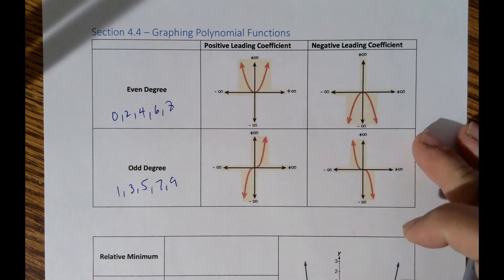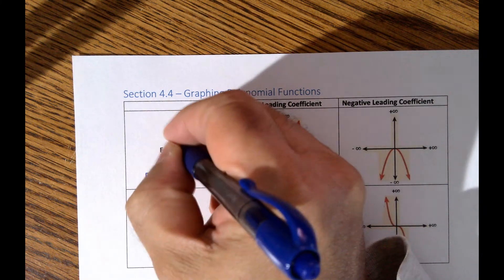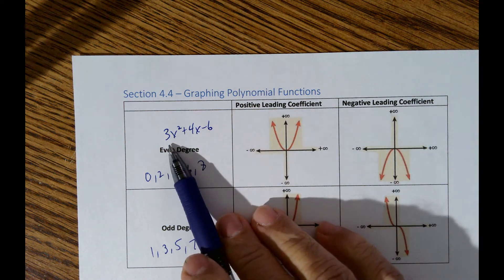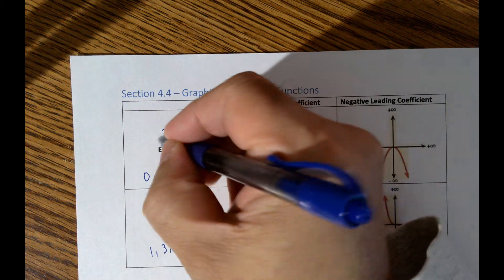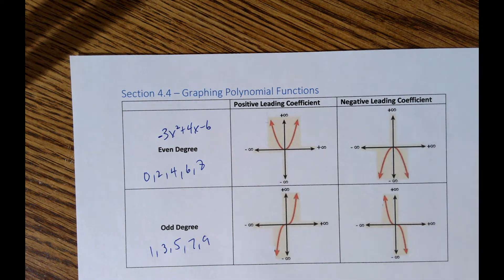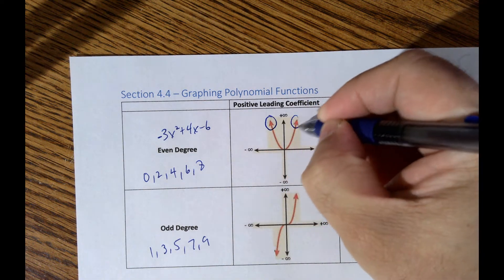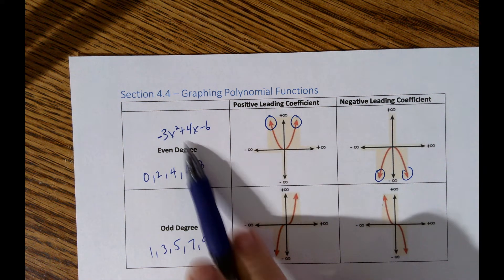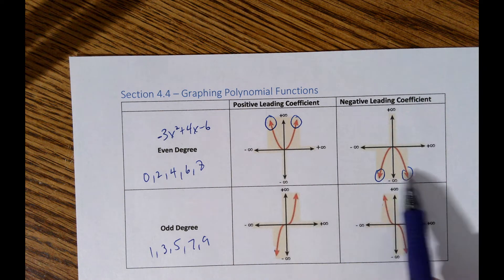A positive leading coefficient with an even degree — for example, 3x squared plus 4x minus 6 — produces a graph where both ends go up. If you put a negative sign on it, both ends go down. The important part is the arrows at the ends, not the middle of the graph.